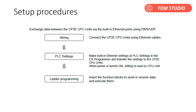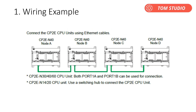The setup procedures are quite simple — just follow three steps and you can easily make it work. For wiring, simply use daisy chain to link PLC units one by one via the built-in Ethernet ports.